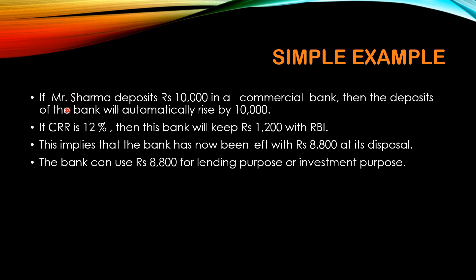Let's take a simple example. If Mr. Sharma deposits 10,000 rupees in a commercial bank, then the deposits of that bank will automatically rise by 10,000 rupees. Now if CRR is 12%, then this bank will keep 1,200 rupees — because 12% of 10,000 is 1,200 — with the RBI as CRR. This implies that the bank is now left with 8,800 rupees at its disposal, which it can use for lending or investment purposes. The 1,200 is not the property of the commercial bank; it is to be kept with the RBI.